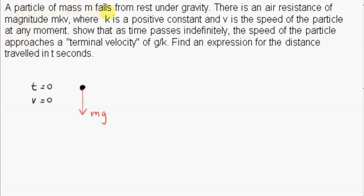A particle of mass m falls from rest under gravity. There is an air resistance of magnitude mkv, where k is a positive constant and v is the speed of the particle at any moment. Show that as time passes indefinitely, the speed of the particle approaches a terminal velocity of g over k.